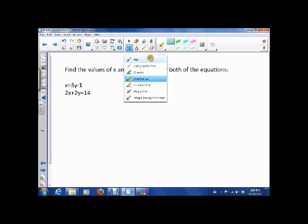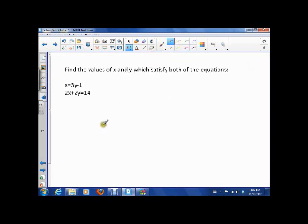We're looking for the values of x and y which satisfy both of these equations. If you look here, this is kind of convenient because this x has already been isolated. So that means that instead of this x value, instead of this x right here, I can write 3y minus 1 because I know that that's what x is equal to.